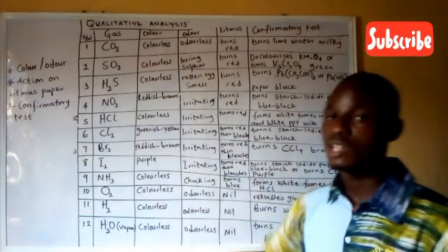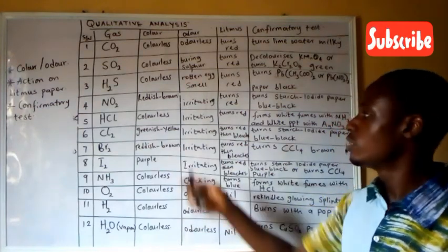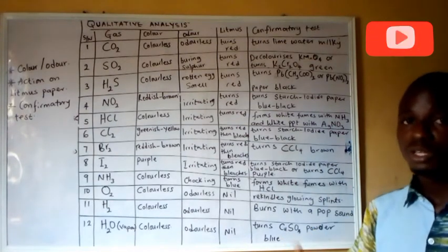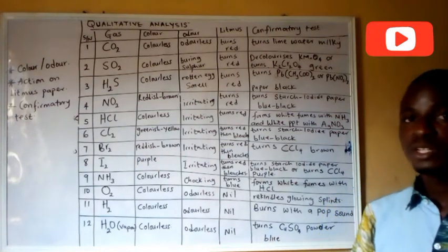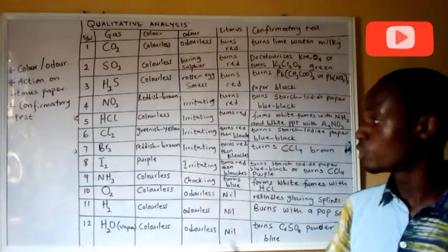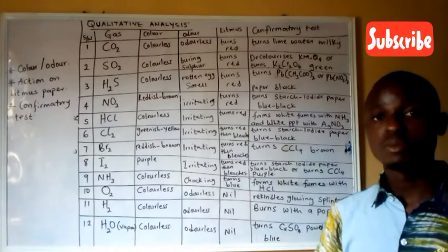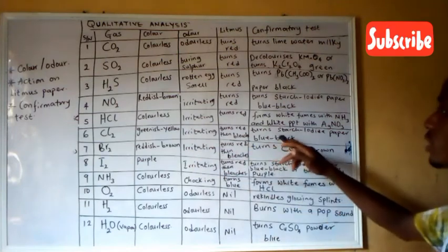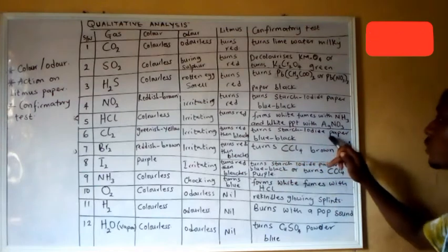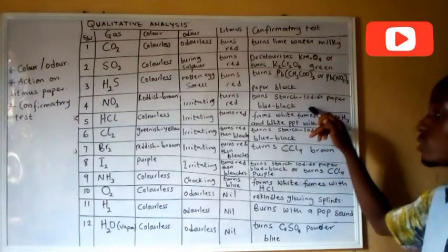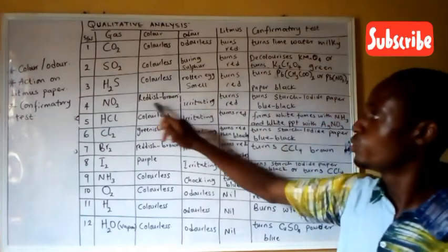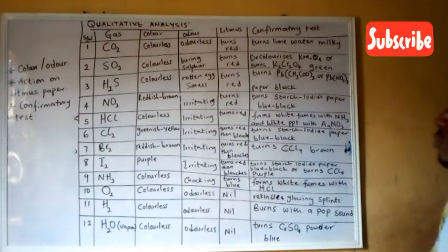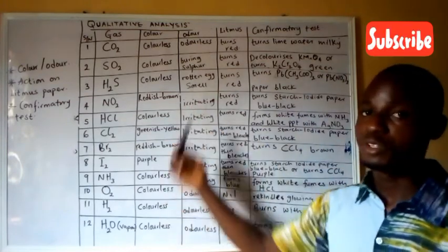Chlorine gas is greenish-yellow in color with an irritating smell and is an acidic gas. When tested with litmus paper, it turns blue litmus paper red and then bleaches it — most halogens do the same. The confirmatory test is that it also turns starch iodide paper blue-black, like NO2, but color and odor differentiate them.